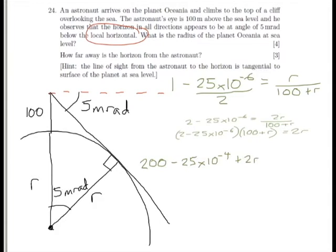So, plus 2r, and finally, take away 25 times 10 to the minus 6r, and all that equals 2r.